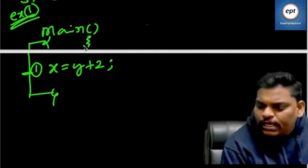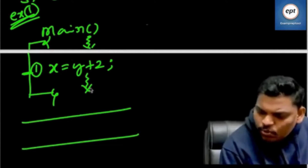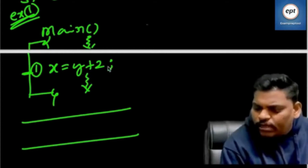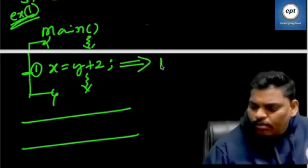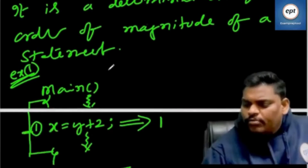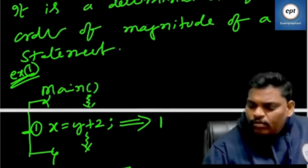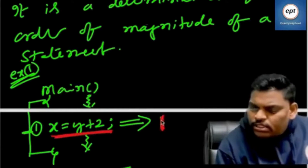When this program is running, this statement will execute how many times? One time. This program contains one statement. Whenever this program is running, this statement will execute one time. That is called order of magnitude. Order of magnitude of this statement is one — while running, this statement will execute one time only.